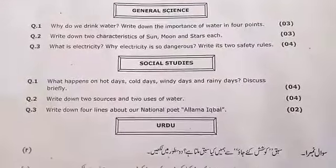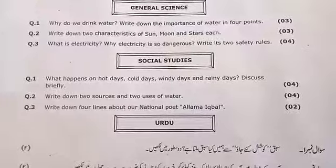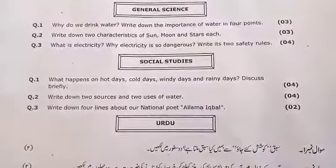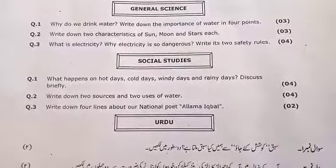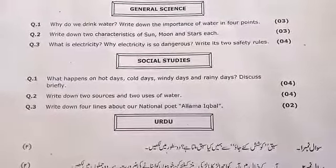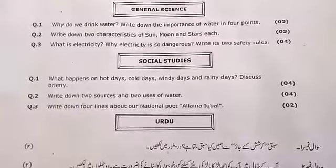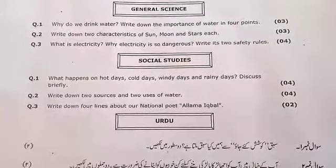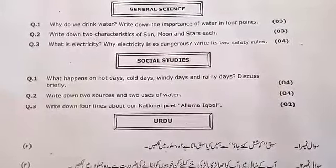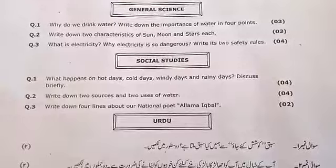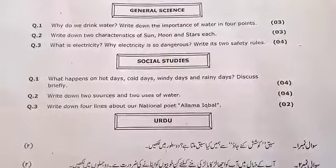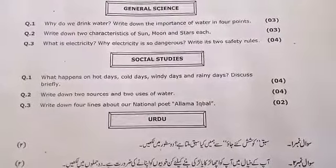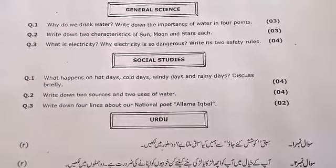Question number 2 is: write down 2 characteristics of sun, moon, and stars each. Write down 2 characteristics of sun — sun is the hottest. Moon and star — star is the biggest as compared to moon. You have to write down any 2 characteristics of sun, moon, and stars.